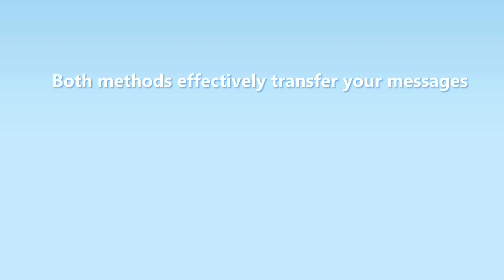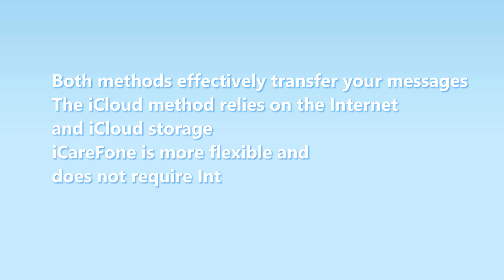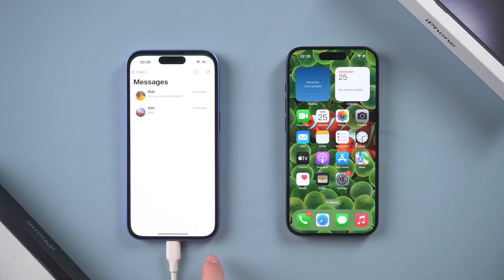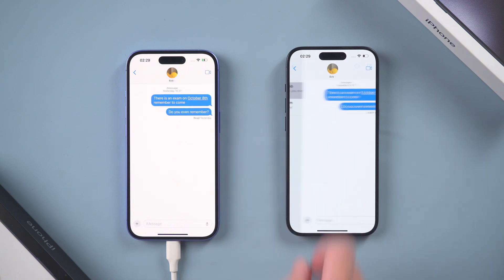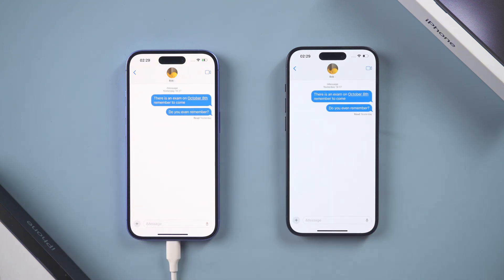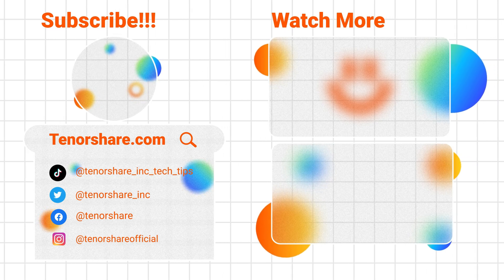Both methods effectively transfer your messages, but the iCloud method relies on the internet and iCloud storage, while iCareFone is more flexible as it doesn't require internet or cloud space. That's all about how to transfer text messages from iPhone to iPhone. If this video is helpful to you, please be sure to subscribe to support us. Thank you for watching — hope to see you soon.